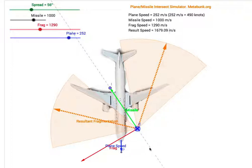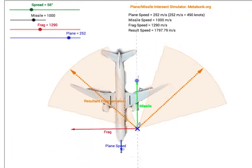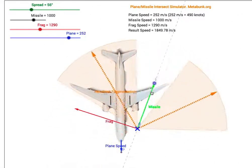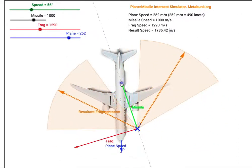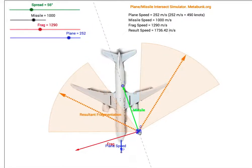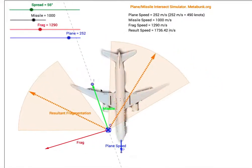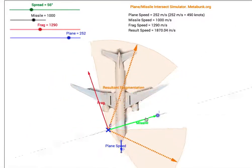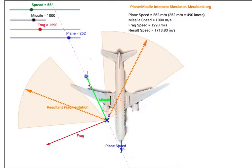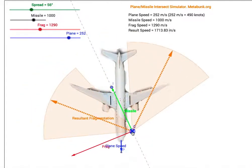The dotted line here indicates the path of the missile. We can move that by grabbing this handle here and rotating it around so we can show different trajectories of the missile. This point here indicates where the missile exploded relative to the plane, and of course we can move that around to show different scenarios with the missile coming from one direction or another.